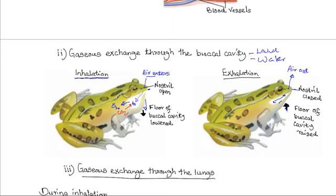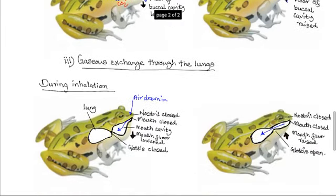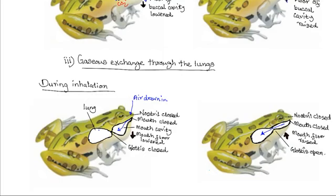Gas exchange also occurs through the lungs. Frogs have a pair of lungs located in the body cavity. However, in frogs, just like the rest of the amphibians, the body lacks ribs and diaphragm, because the thorax does not have ribs like those present in mammals and birds, and there is no diaphragm. Thus, it is the movement of the mouth floor that is used to force air in and out of the lungs. The opening into the lungs is guarded by a flap known as the glottis.